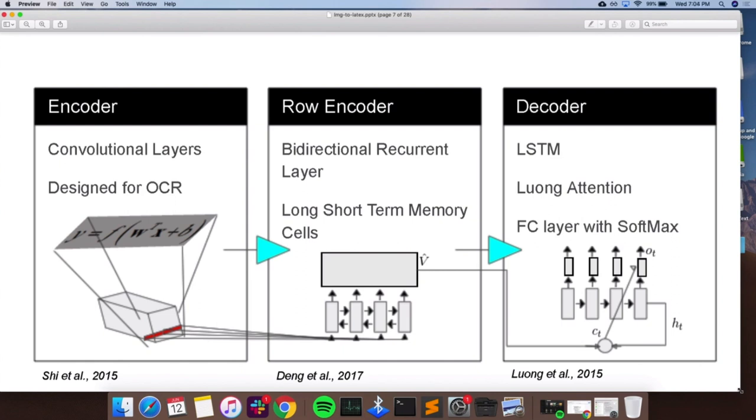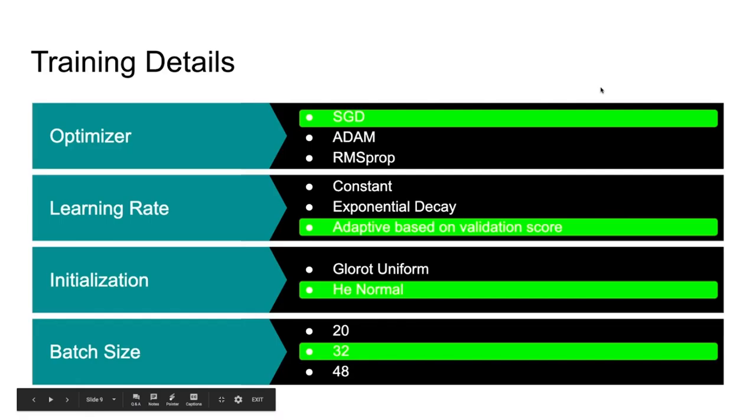And then at each time step, the output gets fed to a fully connected softmax layer to classify the LaTeX symbol. So for the training experiments, we tried a bunch of different hyperparameters listed here, and then the best configuration that we were able to find was the ones highlighted in green. That was stochastic gradient descent with momentum, adaptive learning rate based on the validation score after each epoch, He normal initial weight initialization for the convolutional layers only, and a batch size of 32.